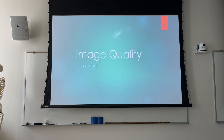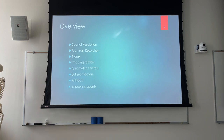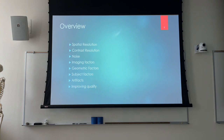So what we're going to talk about is image quality. The overview of what we're going to do in this section is spatial resolution — the actual sharpness or recorded detail. We're going to talk about contrast resolution, what truly gives us our contrast, and what we do to reduce noise and clean up scattered radiation. Scatter radiation is noise; not all noise is scatter radiation, but all scatter radiation is noise. We'll talk about imaging factors, geometric factors (which are your spatial resolution), subject factors, artifacts, and what we can do to improve quality.